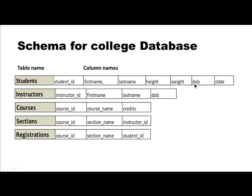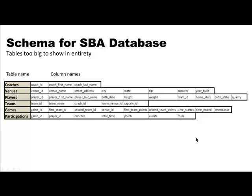Here is the schema for our basketball database — you're familiar with this from the practical activity in the first week. It has tables called coaches, venues, players, teams, games, and participations, and for each one you can see the columns in those tables. These columns are slightly different from what you saw in the first week, but nothing materially different. I'm not showing the actual data because this database is pretty big, but to construct queries all you really need is the schema.